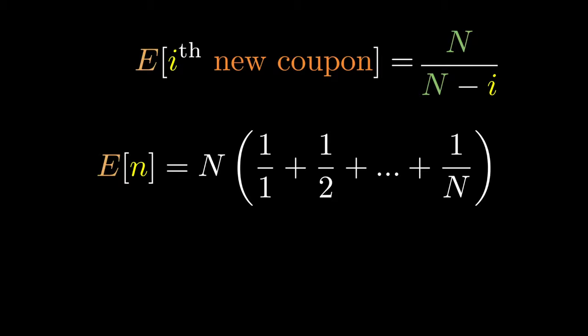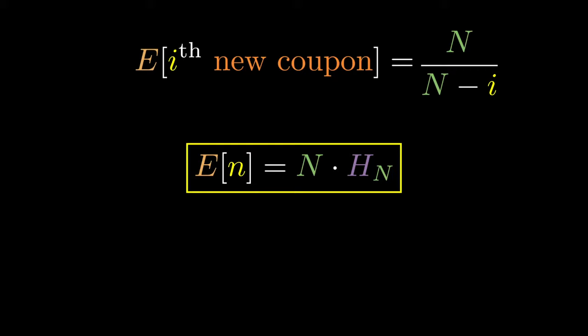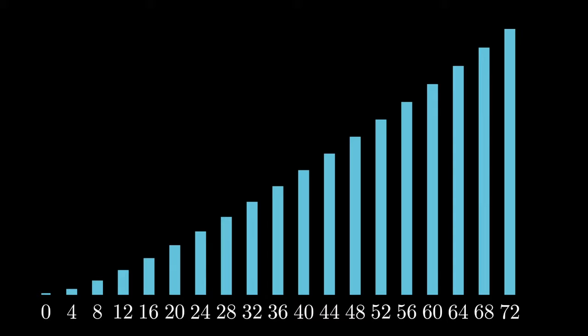And there you have it. The answer to our original question is that on average we would have to draw N times the Nth harmonic number of coupons to get all N coupons. I've created a nice visualization that shows the progression of this value for an increase in N. This function is actually bounded by some function of order N log N.